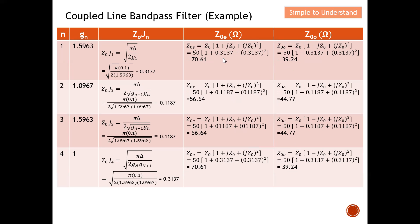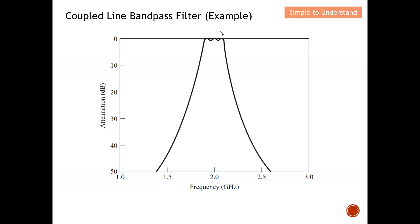Finally, let's look at the filter response. You can see it is centered at 2 GHz with a bandpass response, confirming the design is correct. With this, I have successfully applied the formulas to design a coupled-line bandpass filter. In the next video I will discuss how to transform the coupled-line sections into microstrip lines. Please like and subscribe — thank you so much for your support. I hope to see you soon. Bye for now.